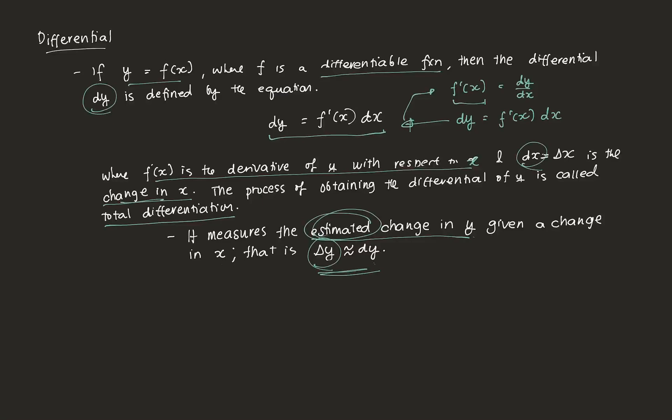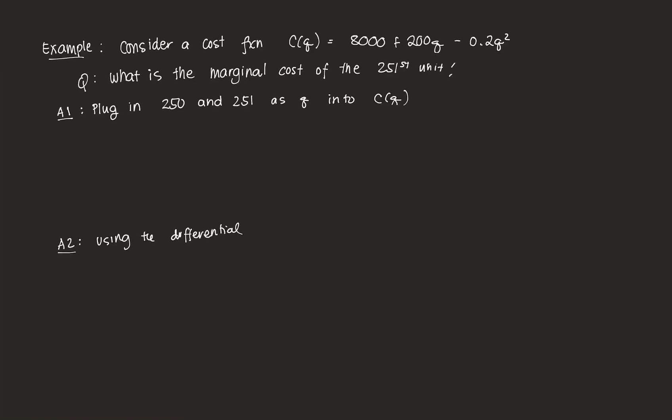Let's have an example. Consider a cost function — say a firm had the cost function 8,000 plus 200q minus 0.2q squared. We want to know the marginal cost of the 251st unit. To get the actual marginal cost, we can plug in 250 and then 251, and the difference between the two is essentially the marginal cost of that additional 251st unit.